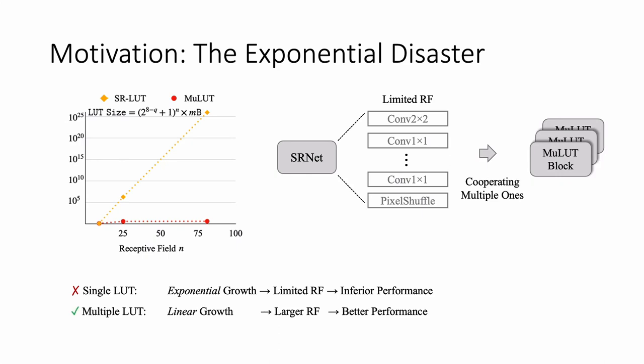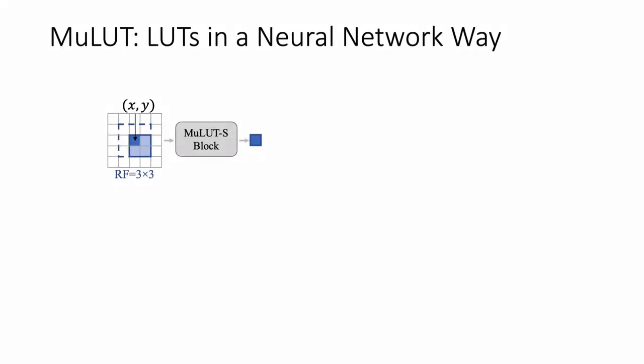We propose two fundamental ways, complementary indexing and hierarchical indexing, to generalize a single LUT to MuLUT, whose receptive field can be effectively enlarged by constructing multiple elementary components just like a neural network.